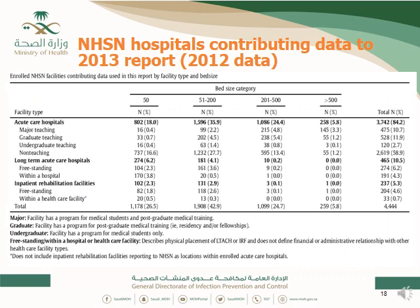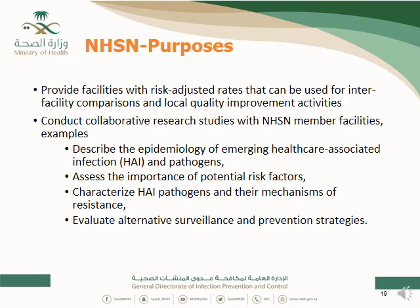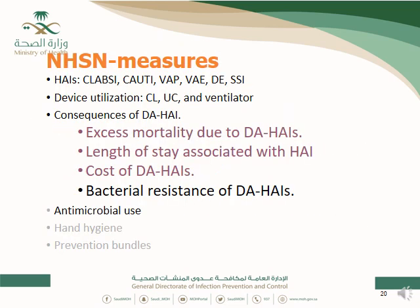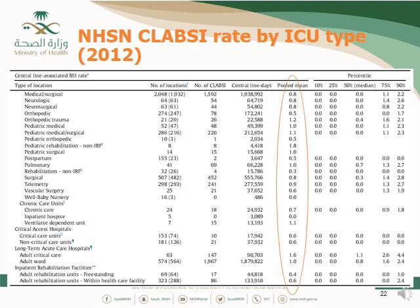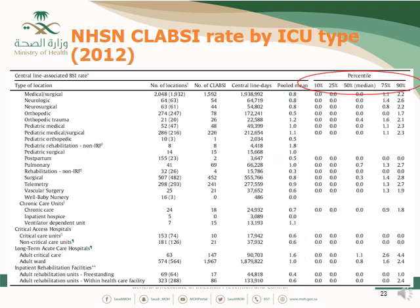The hospital varies in size. NHSN provides facilities. The measures that you can find in NHSN publications include this CLABSI rate. So the use of this table is mainly using the pooled mean, and if you look here, you will see the percentile on the right.